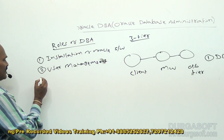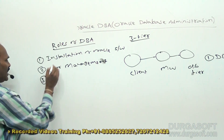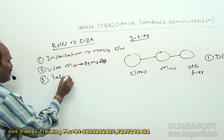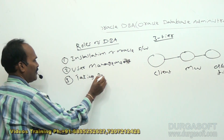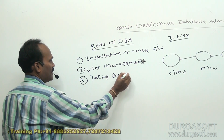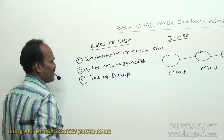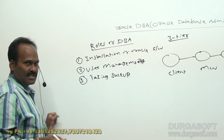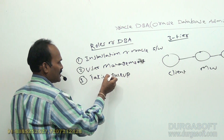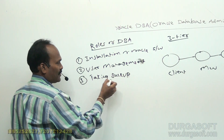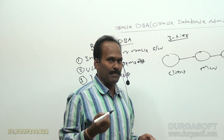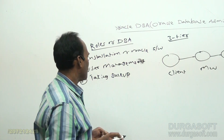The third task of a DBA is taking backups. This can be either daily, weekly, or monthly backups. The DBA does not take backups manually — there are automated scripts for taking backups, and using those scripts the DBA takes the backup.